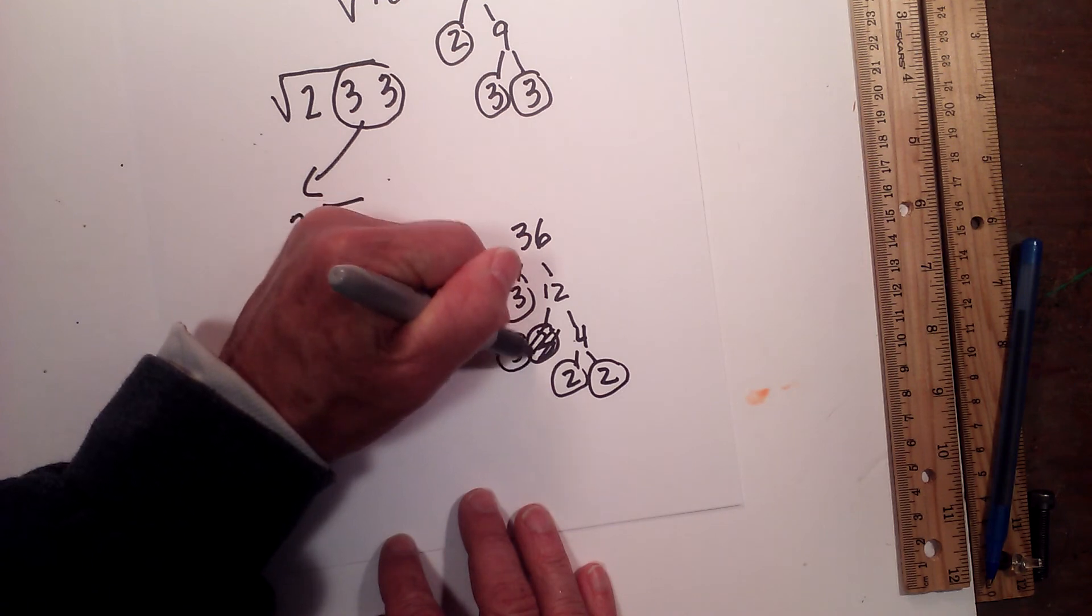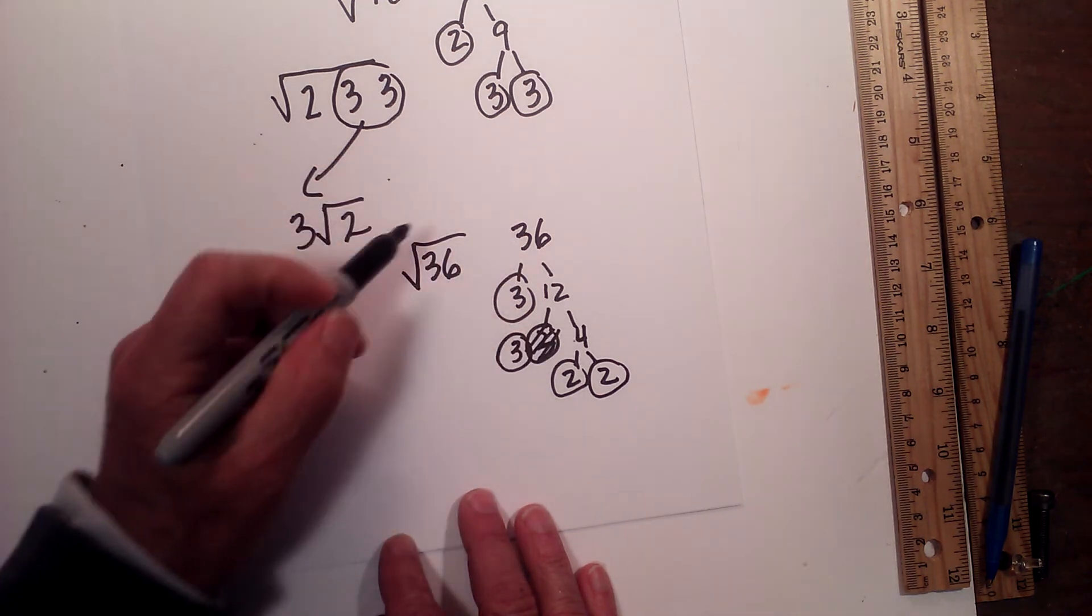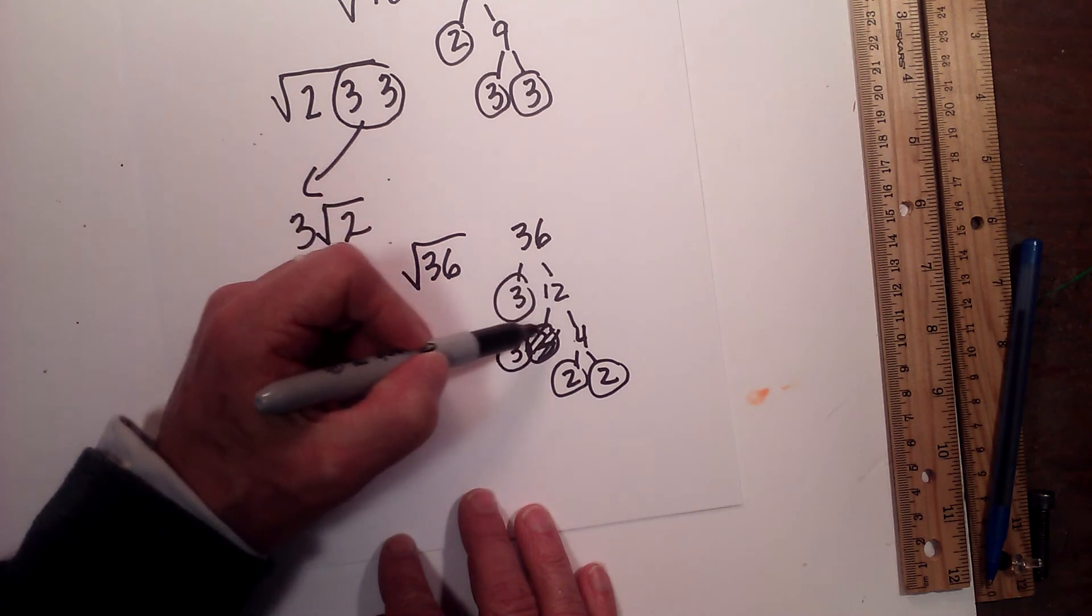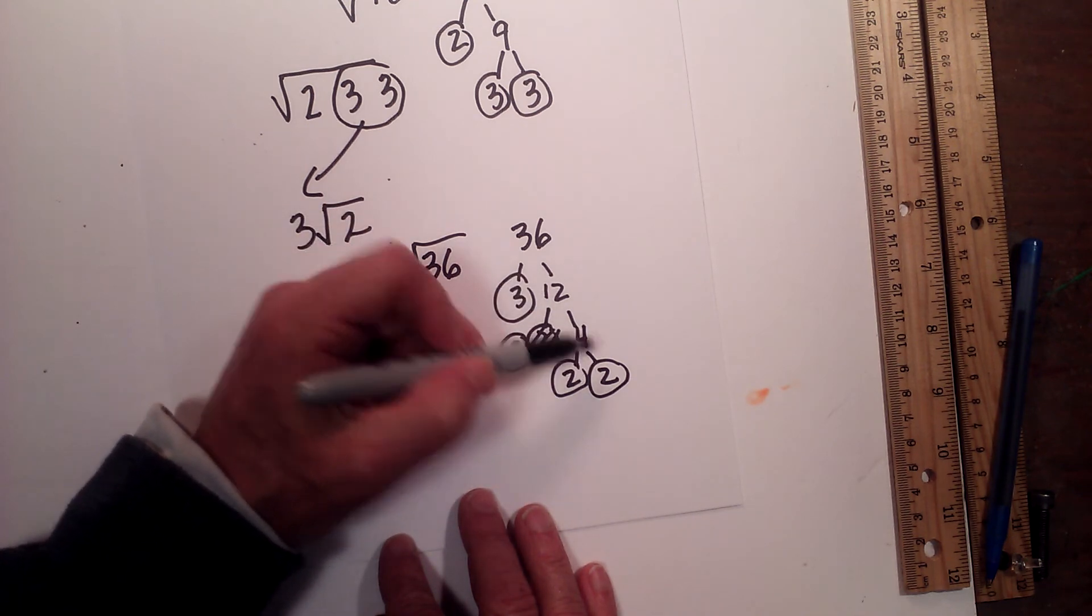So that will be 3 times 4. And then, so square root is 3 times 12. 12 is equal to 3 times 4, and then 4 is 2 times 2.